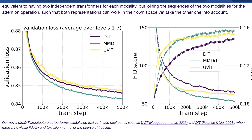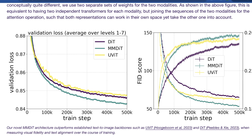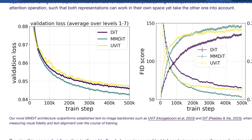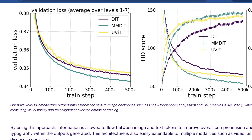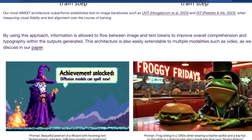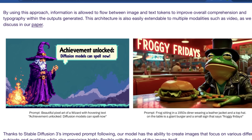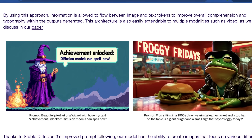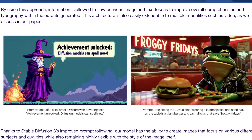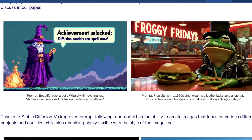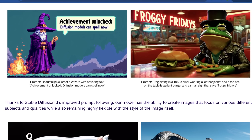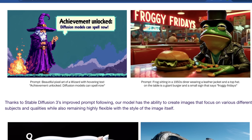These graphs show validation loss for different models and attributes during training — basically showing that as training steps increase, validation loss goes down, which is what you want. Stability AI says that by using this approach, information is allowed to flow between image and text tokens to improve overall comprehension and typography within generated outputs. This architecture is also easily extendable to multiple modalities such as video, though they're still being very careful about what they reveal on that front. A model like this will also be much better at creating multiple versions and retaining initial prompt attributes compared to other models.